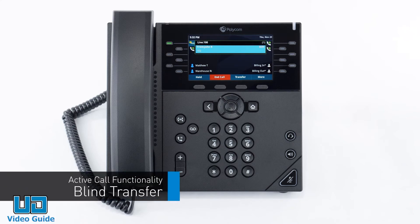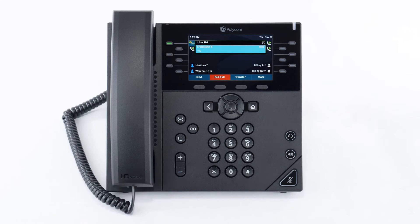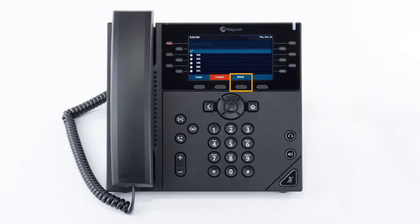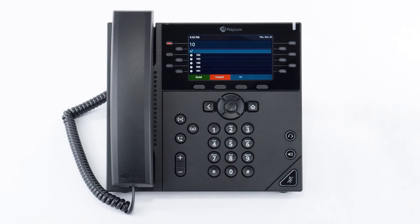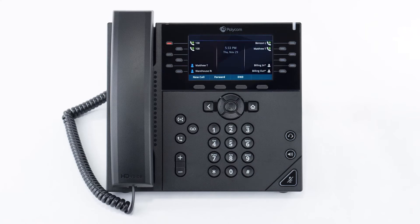A blind transfer allows you to immediately transfer a call to another number or extension. While on a call, press the transfer soft key to place the caller on hold, then press the blind soft key to change the transfer type. Dial the extension or number you wish to transfer to and press the send button — the call is immediately transferred to the second party.